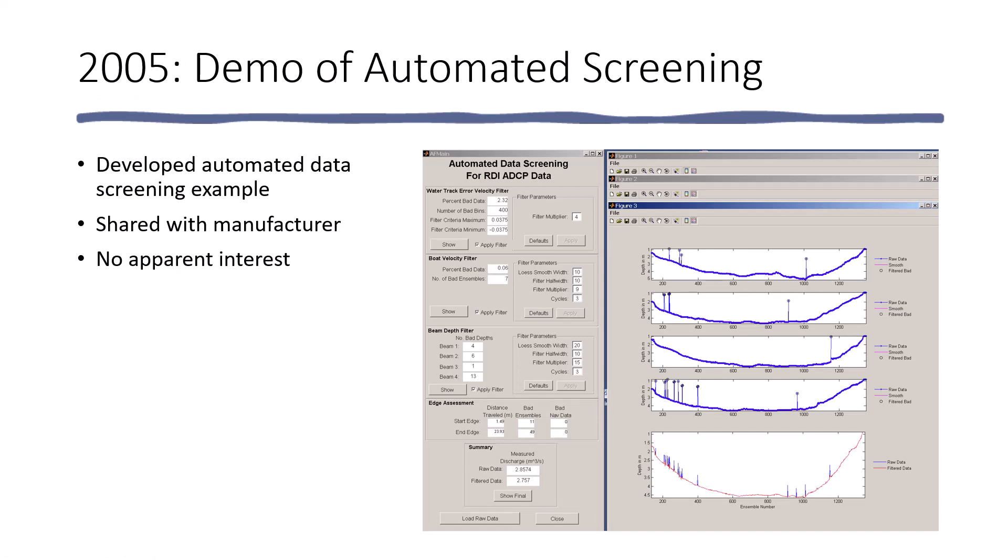It began in 2005. As a user of WinRiver, WinRiver 2, there are thresholds that you can set to screen out invalid data. However, those thresholds had to be set manually. And I envisioned, based on what I knew about those thresholds and about the way that the data were collected and should look, that we could use statistical properties to automatically set those thresholds and filter out invalid data.